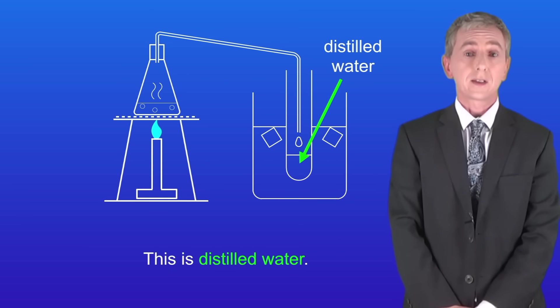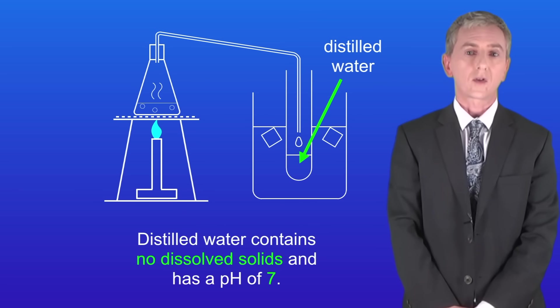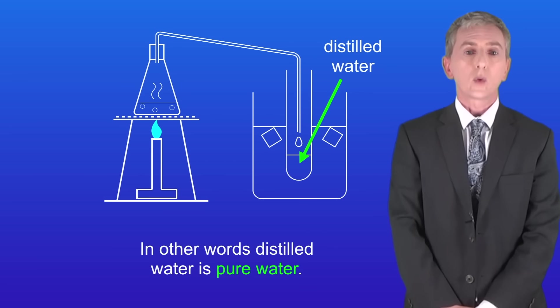Now this is distilled water. Distilled water contains no dissolved solids and has a pH of 7. In other words, distilled water is pure water.